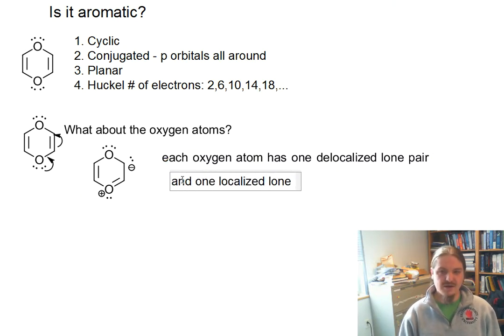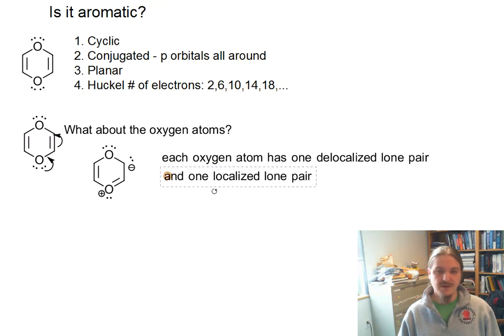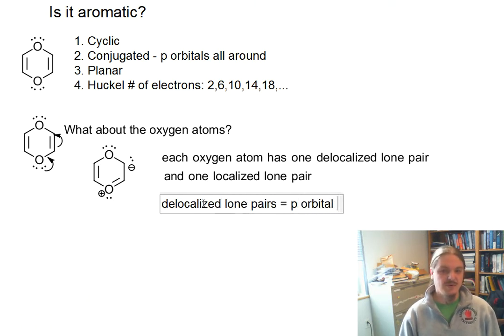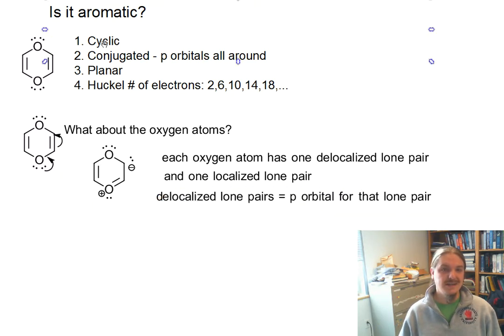So each oxygen atom has one delocalized lone pair, and each also has one localized lone pair. Generally, if there's an oxygen atom, you have two lone pairs. At most, one can be localized. All right. Now, so if they have delocalized lone pairs, that means that there's p orbital that that lone pair is in. And so we have p orbitals on those two oxygens. So now we meet the criterion. Is it conjugated p orbitals all around? Okay.